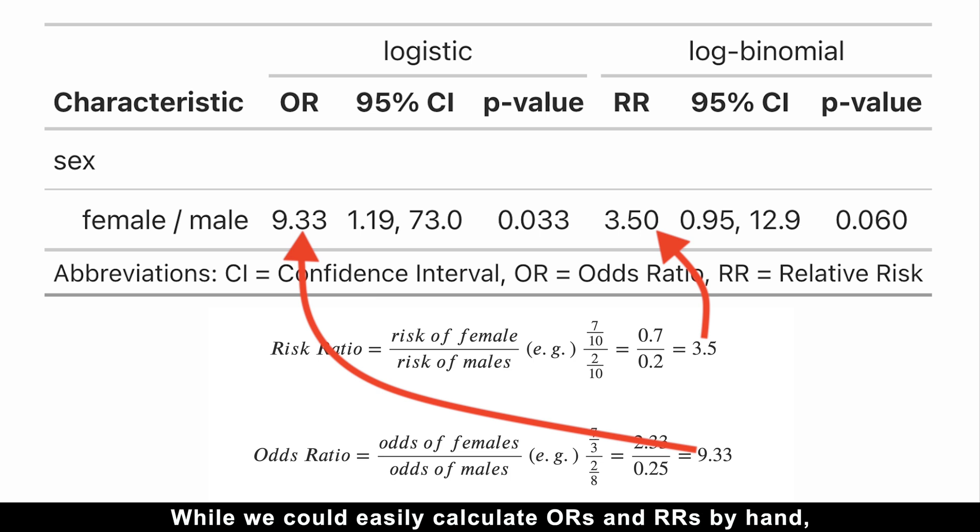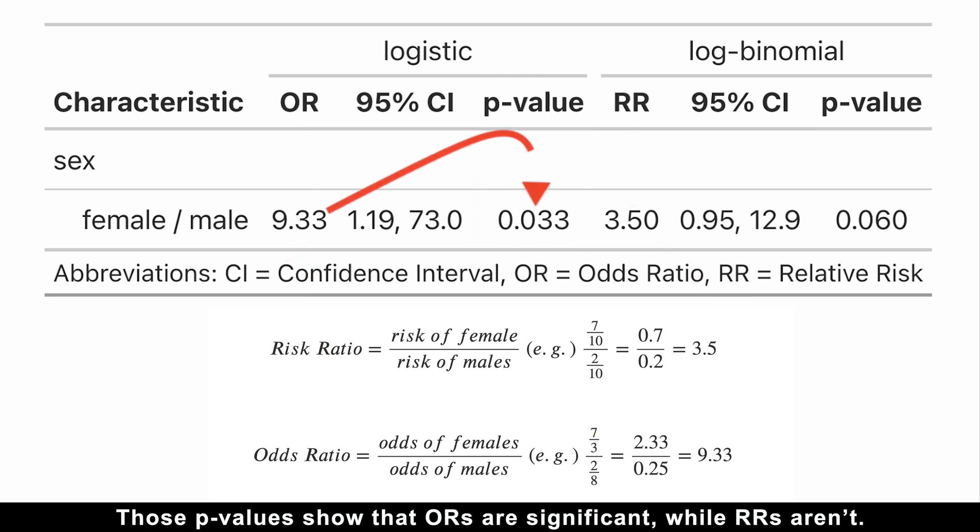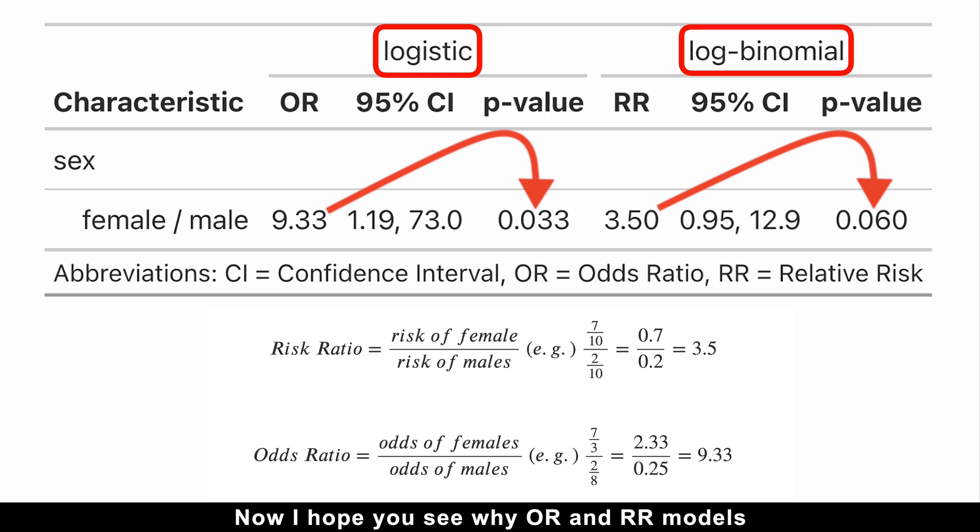While we could easily calculate odds ratios and risk ratios by hand, p-values for those models are trickier. Those p-values show that odds ratios are significant, while risk ratios aren't.